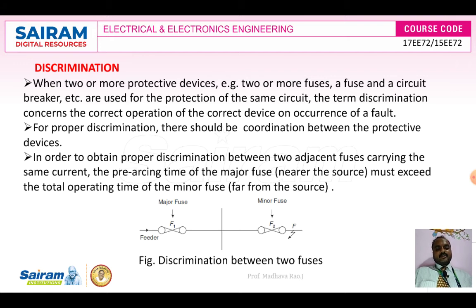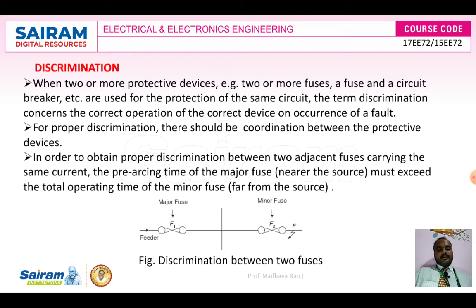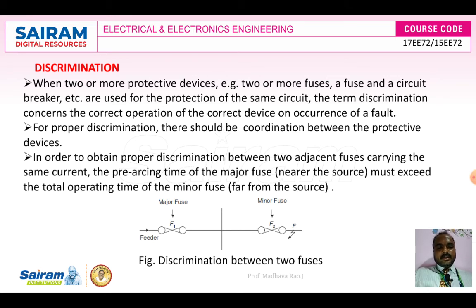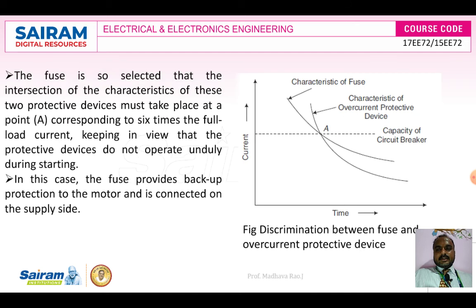Discrimination is used for two protective devices — you can take one as a fuse and the other as a circuit breaker. When one protective device does not act, the other protective device acts. Like primary and backup protection. Here we have fuse one and fuse two — major fuse and minor fuse — and whenever the minor fuse does not melt, the major fuse should melt.